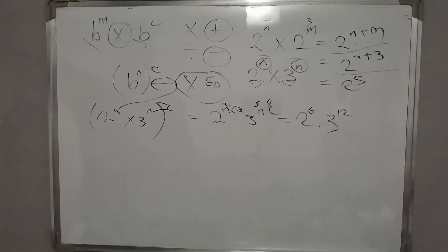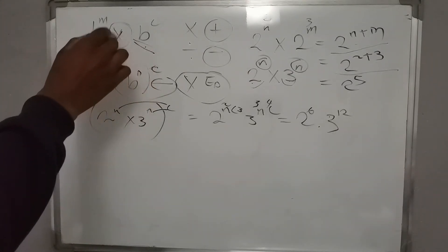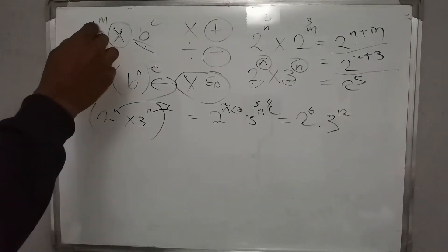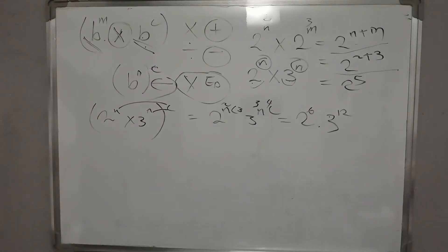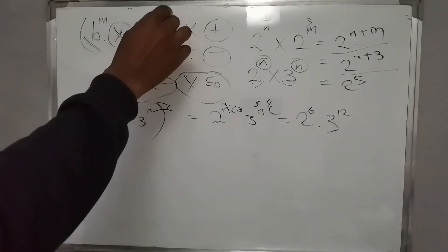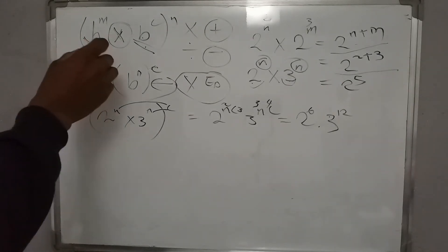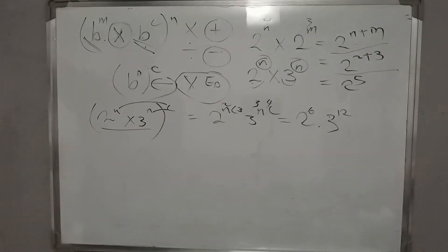So to summarize: when the bases are the same and there is a multiplication sign, we add the exponents. When the bases are the same and we are enclosed in parentheses raised to a certain exponent, we multiply. And when the bases are not the same but enclosed in parentheses raised to a certain exponent, we also multiply each exponent.